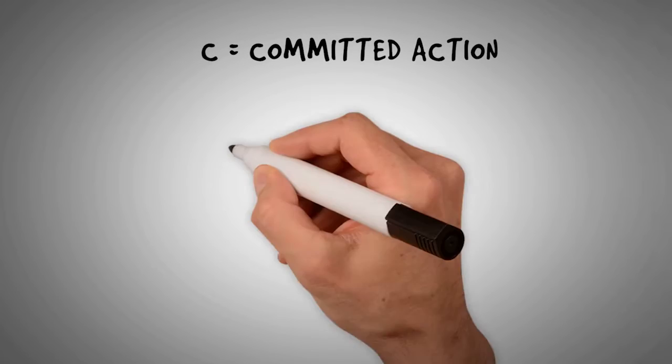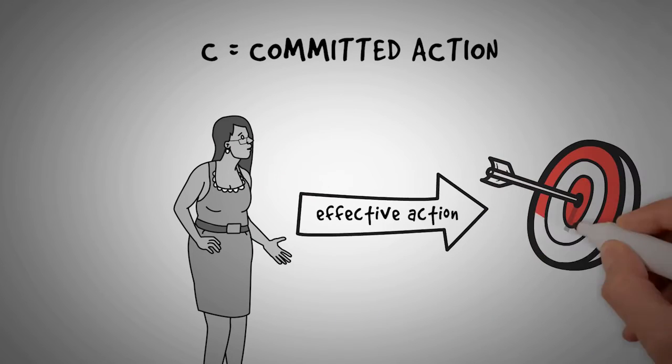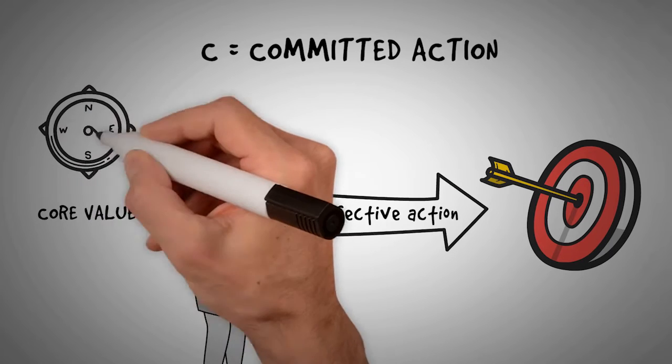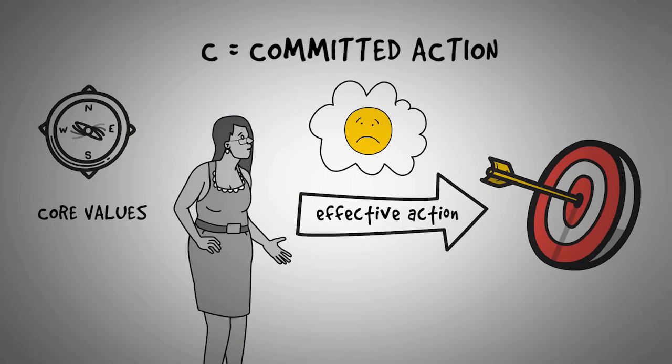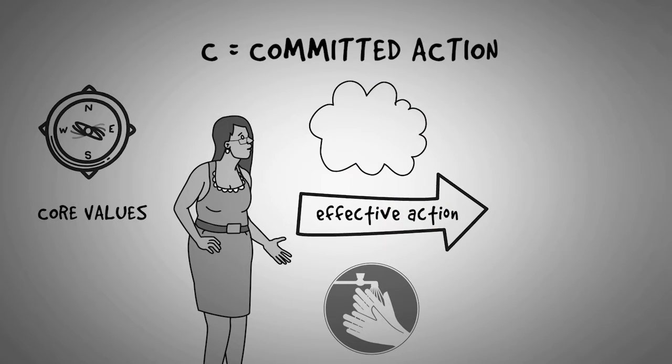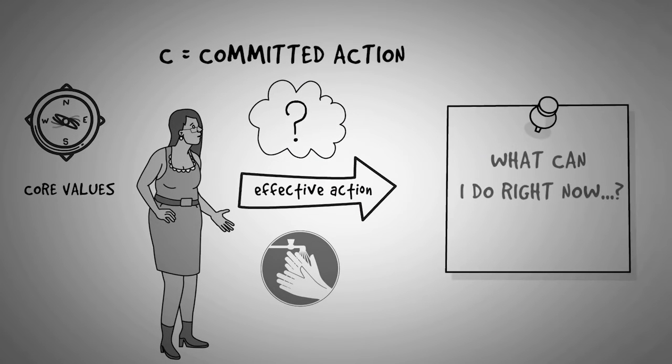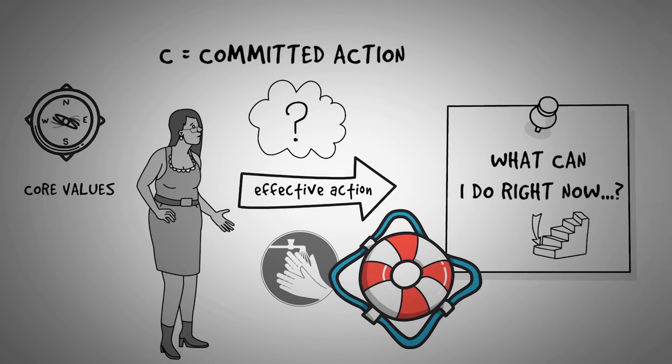And then C is for committed action. This means effective action guided by your core values. Action you take because it's important to you, even if it brings up difficult thoughts and feelings. Of course, this includes following official guidelines on what to do during this crisis. But in addition, ask yourself regularly, what can I do right now, no matter how small it may be, that improves life for myself or others I live with or people in my community? And whatever the answer is, do it and engage in it fully.